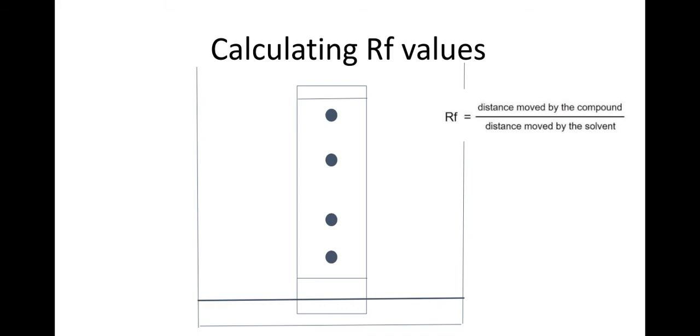Now we need to be able to calculate an RF value. So what you would do is once your chromatogram is finished, you would draw up a line at the top there where your solvent got up to and you would work out the different values of the RF by measuring to the end of the amino acid which you put here at the top and then the distance moved by the solvent which is measuring up to that line there.